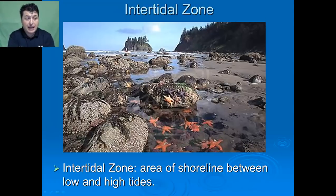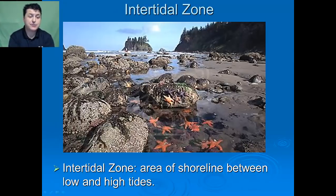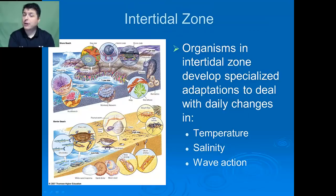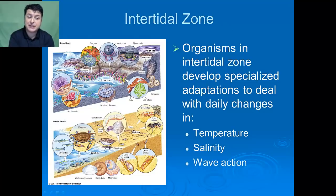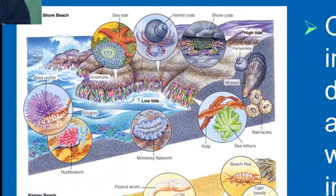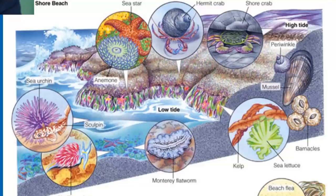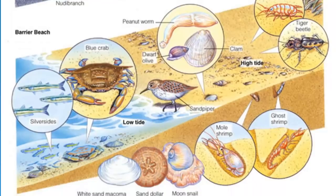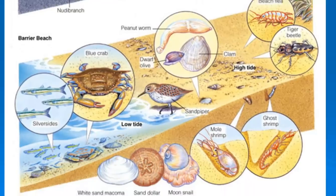The area of shoreline between the low and high tide is called the intertidal zone. Organisms in this zone have developed specialized adaptations to deal with daily changes in temperature, salinity, and wave action. Many of them have specialized structures which allow them to hold on to various substrates, dig into the sand, or hide in protective shells.